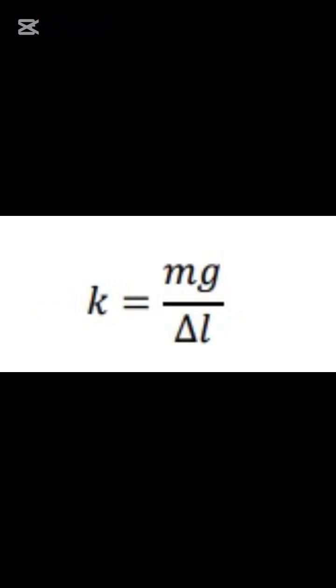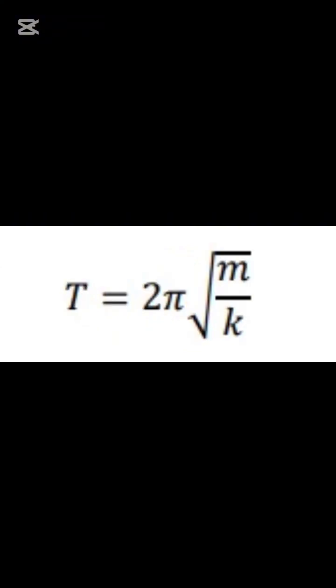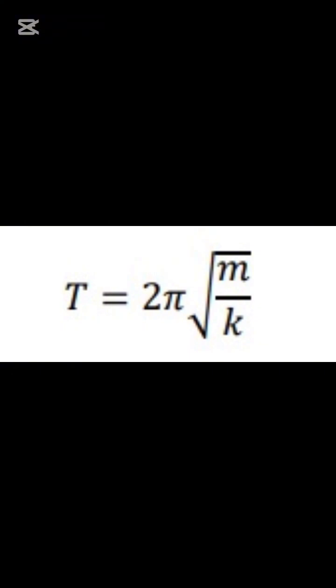Thus, we can measure k as mg over delta L. If the object was not stationary, it would have a motion that is a simple harmonic motion. This motion's period would be 2 pi square root of m over k. Therefore, we found another way of calculating k, where we can calculate it as 4 pi squared m over T squared.